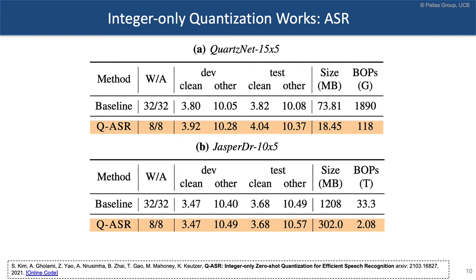We have also applied this to automatic speech recognition — a paper we posted to arXiv last week. Two models, QuartzNet and Jasper, both from NVIDIA, are used for automatic speech recognition. We applied integer-only quantization and saw very little accuracy degradation on the LibriSpeech dataset. We also took a step further and used zero-shot or data-free quantization for this task.